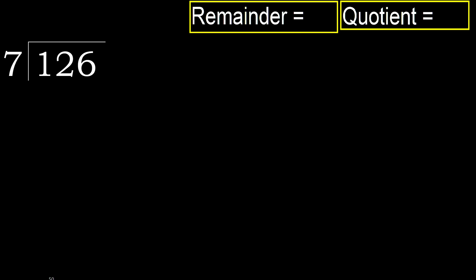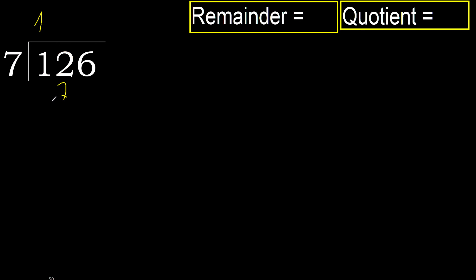126 divided by 7. 1 is less, therefore next. 12 is not less, therefore with 12: 7 multiplied by which number is nearest to 12 but not greater? 7 multiplied by 2 is 14 — 14 is greater. Multiply by 1: 7. 7 is not greater. 12 minus 7 equals 5.